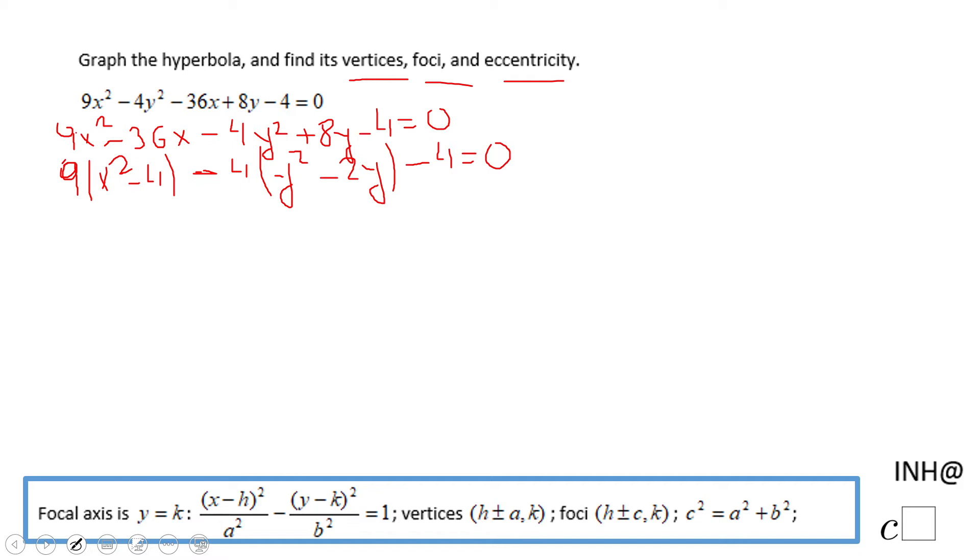Now we're going to do the completing the square method. So we have x² - 4x. To complete the square you have to divide that 4 or negative 4 by 2, so that will be 2, and square it we're going to get 4, so that's the number that will complete the square.